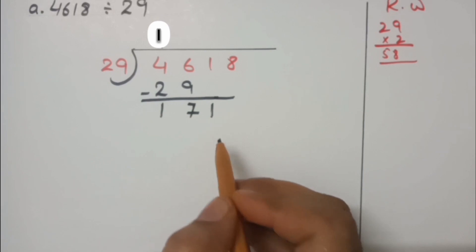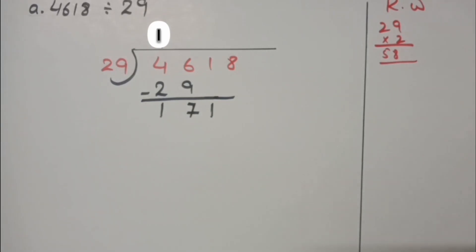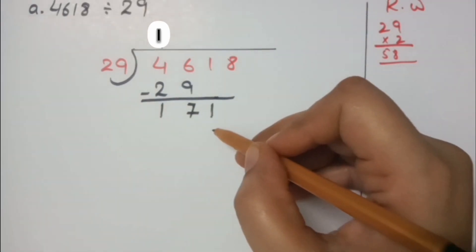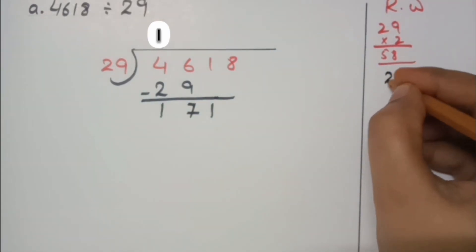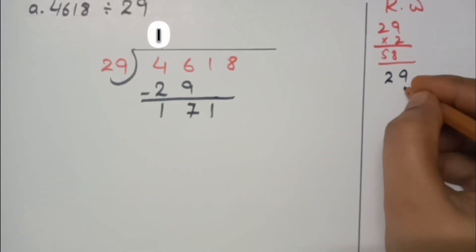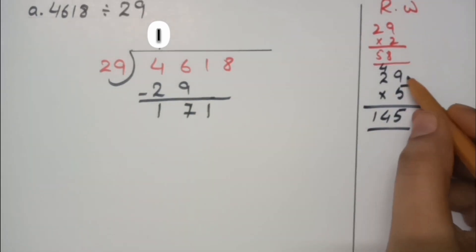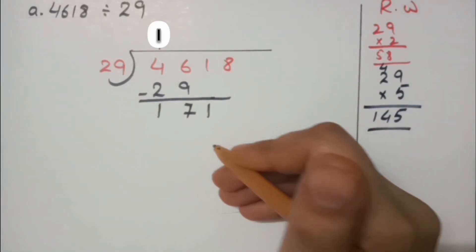It now becomes 171. We need to read the table of 29: 29 threes, 29 fours, 29 fives. I think 29 twos = 58 would be too small and 29 threes would be closer. If we multiply 29 with 6, it would obviously be more than 171.